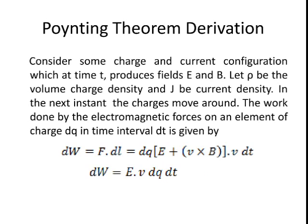Consider some charge and current configuration which at time t produces electric field and magnetic field. Let rho be the volume charge density and J be current density. In the next instant the charges move around. The work done by the electromagnetic forces